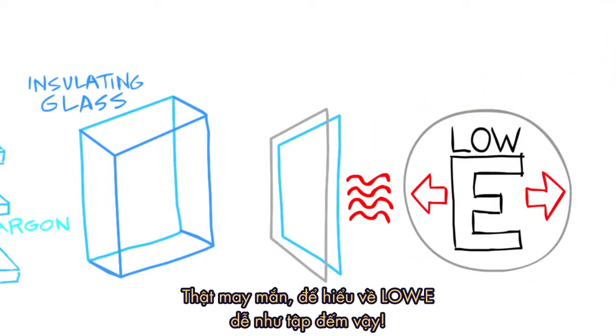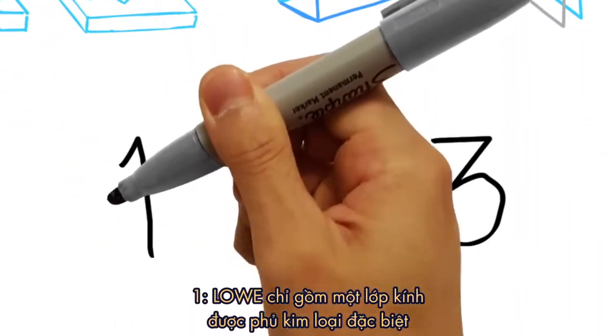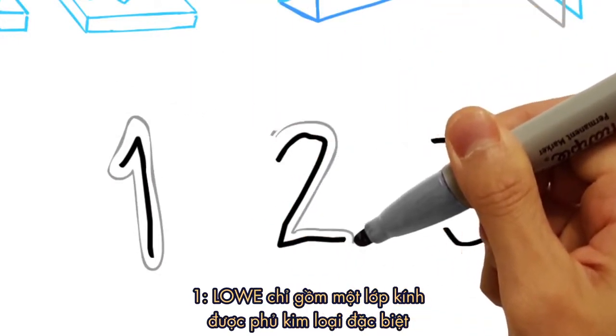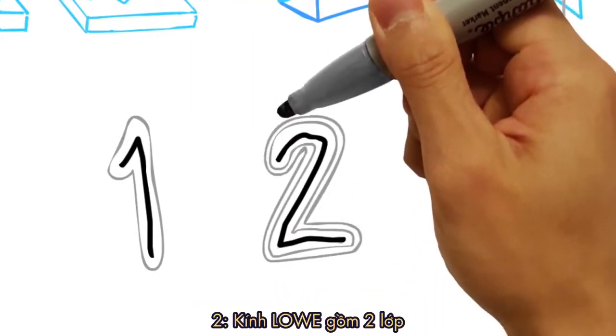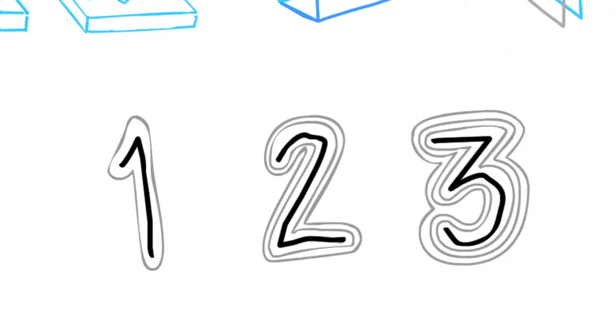Luckily, understanding these low-E coatings is as simple as one, two, three. Low-E1 means there's a single layer of metallic coating. Low-E2 refers to a double layer, and Low-E3 indicates three coatings.